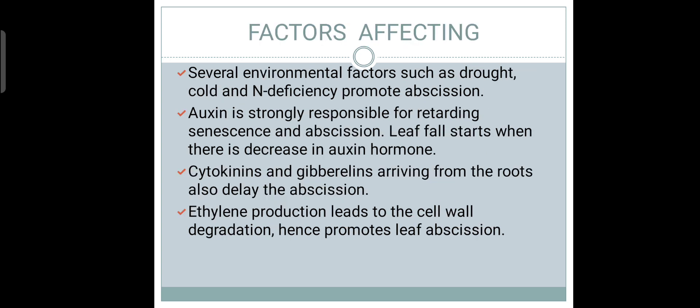What are the factors affecting leaf obsession? There are several environmental factors such as drought, cold and nitrogen deficiency which promote obsession. One of the major plant hormones, auxin, is strongly responsible for retarding senescence and obsession. So during leaf fall, there is a decrease in auxin hormone. Other hormones like cytokinins and gibberellins arriving from the roots also delay the obsession.